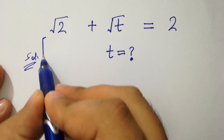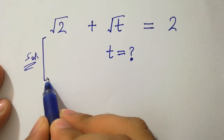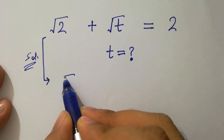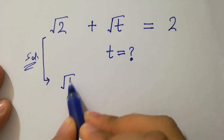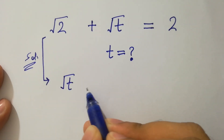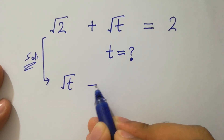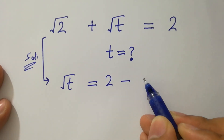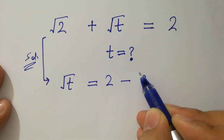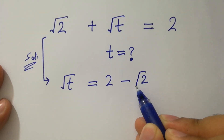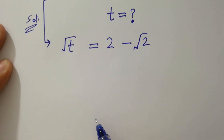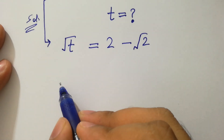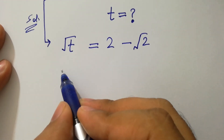This problem can be written as square root of t equal to 2 minus square root of 2. To solve this, take squared on both sides.